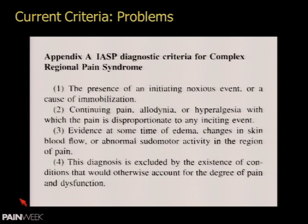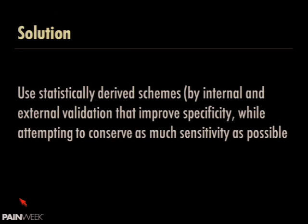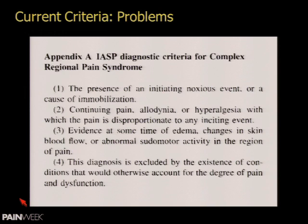The old IASP criteria had a specificity of 0.4 — horrible. You'd have more chance of diagnosing the disease correctly by flipping a coin than using the old IASP criteria. We knew we could use statistically derived and empirical schemes to derive criteria based on actual patient data — our patients informed the derivation of the criteria. We had a standardized symptom and sign checklist with 123 patients, published internal and external validation in 1999.